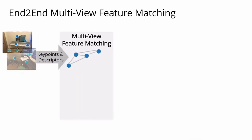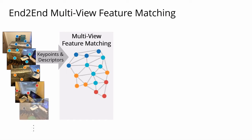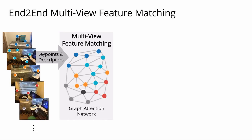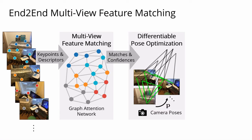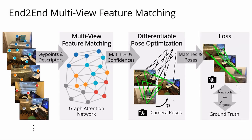Our method encodes keypoint descriptors from multiple images into a graph network for matching. During message passing, each keypoint interacts with keypoints from the same image through self-attention, and with keypoints from all other images through cross-attention. This way, the receptive field spans across all images to produce globally-informed matching solutions. The resulting matches and confidences serve as weighted constraints in a differentiable pose optimization. The loss is defined on the matching and pose estimation result. Our approach is fully differentiable, and gradients flow from the loss to the matching network, informing it about correspondences better suited for pose optimization and learning to downweight outliers.